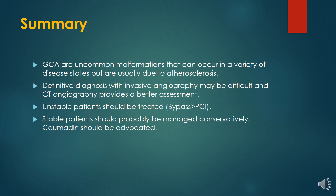In summary, coronary aneurysms are uncommon malformations that can occur in a variety of disease states, most commonly due to atherosclerosis. Definitive diagnosis with invasive angiography may be difficult, and CT angiography provides a better assessment. Unstable patients should be treated with bypass and PCI, while stable patients should probably be managed conservatively.